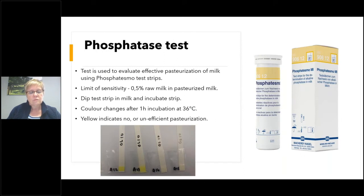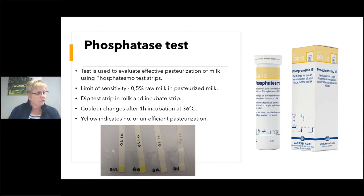The next test is the phosphatase test. About two months ago, we had a whole presentation about pasteurization and its efficiency — this test is exactly what we do. We test to see if pasteurization of the milk was effective using the Phosphatesmo strip. The strip is dipped into the milk and incubated in a little bag for one hour at 36°C. A color change means there is still alkaline phosphatase left in the milk, indicating the milk was either inefficiently pasteurized or not pasteurized at all. In the picture shown, the very dark yellow result means this milk was not pasteurized at all.